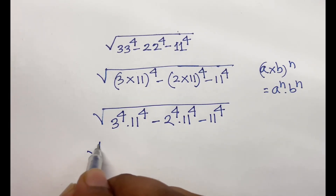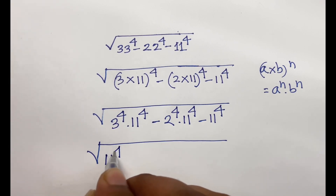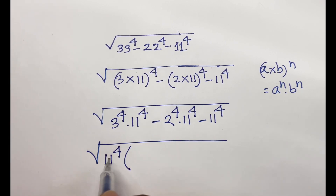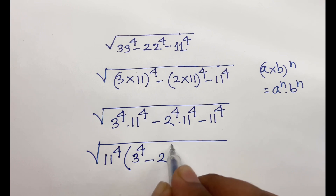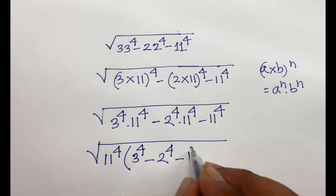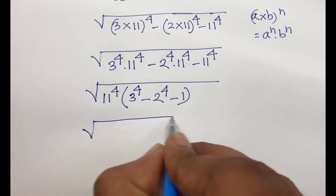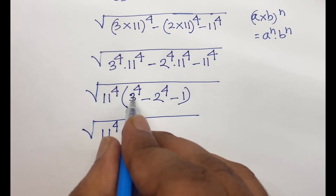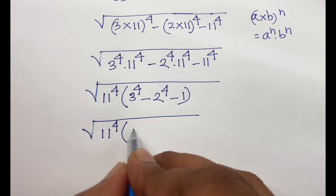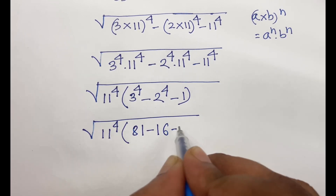Now, 11 to the power 4 is common. So factoring out: 11 to the power 4 times (3 to the power 4 minus 2 to the power 4 minus 1). Then, inside the square root, 3 to the power 4 is 81, 2 to the power 4 is 16, minus 1.